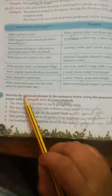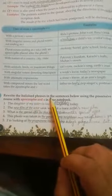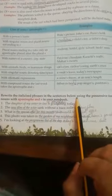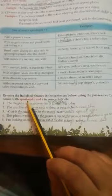The question says, rewrite the italicized phrases in the sentences below using possessive form of nouns with apostrophe and s.